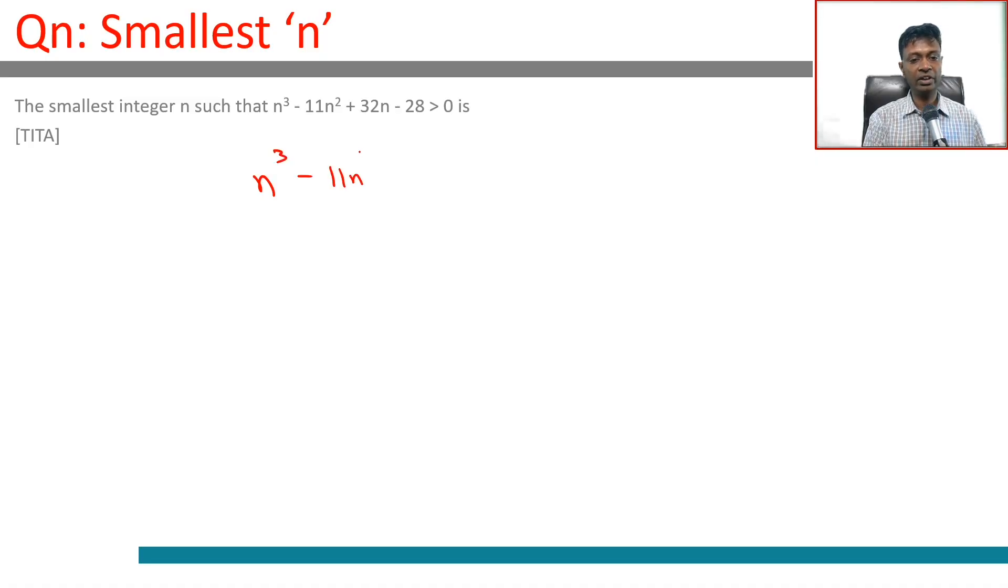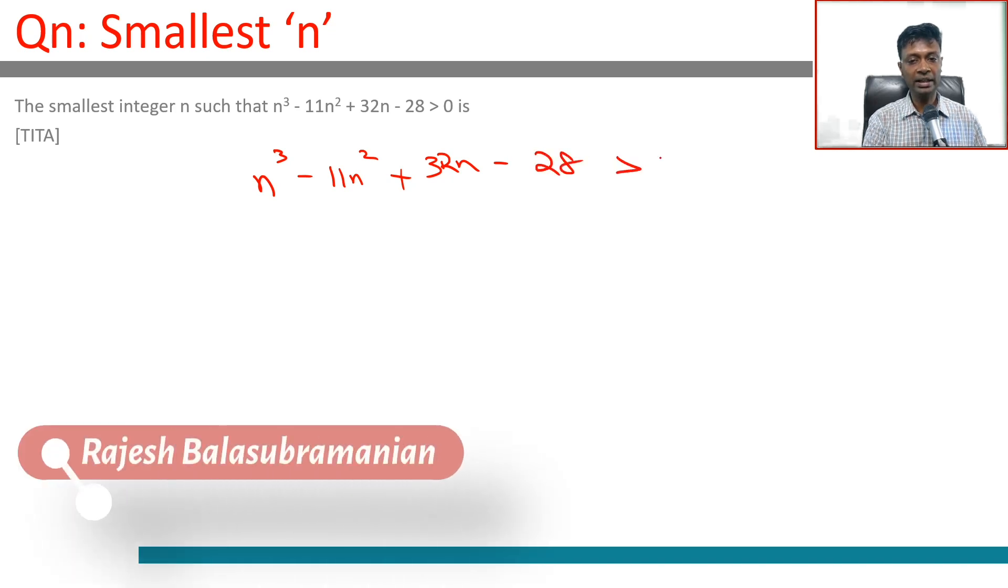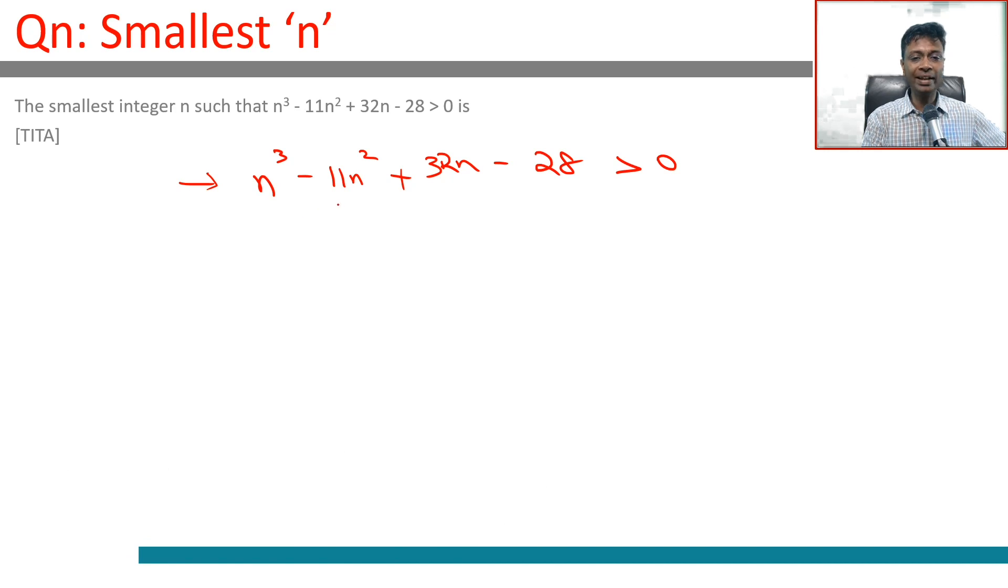n³ - 11n² + 32n - 28 > 0. The smallest integer n. n³ is powerful, so if you put 100 or then n³ will kill everything else with reasonable coefficients. n³ is very powerful, so if n³ is positive, n³ is way more powerful than n², way more powerful than n.